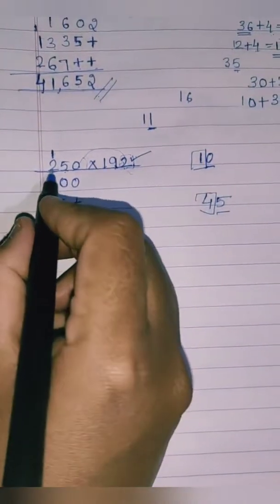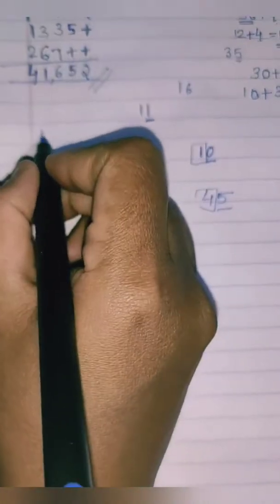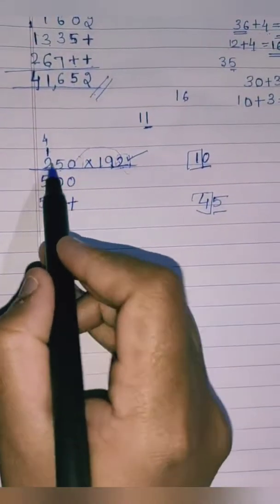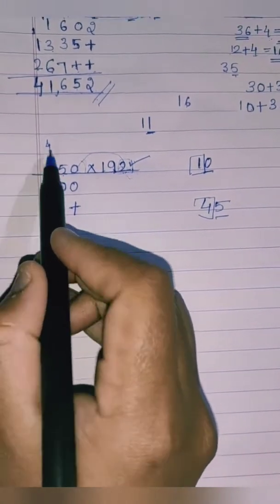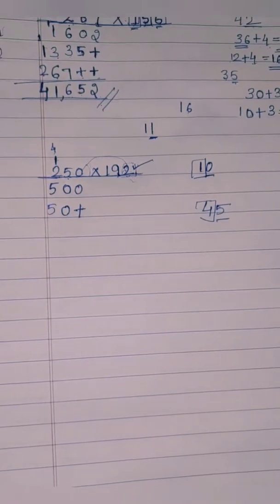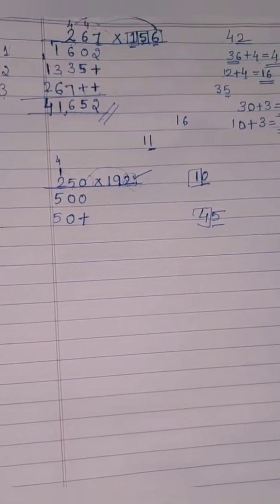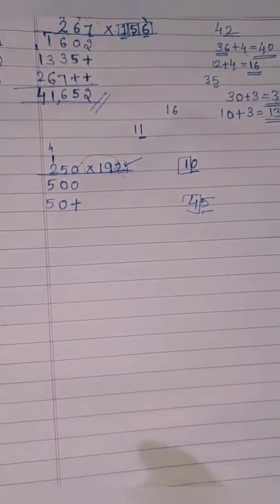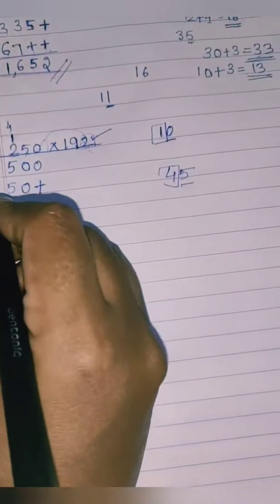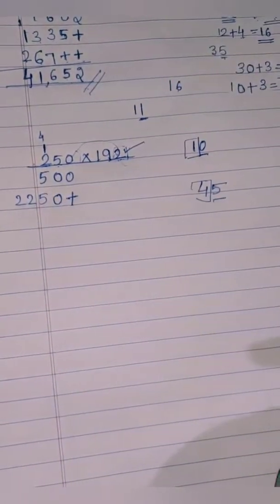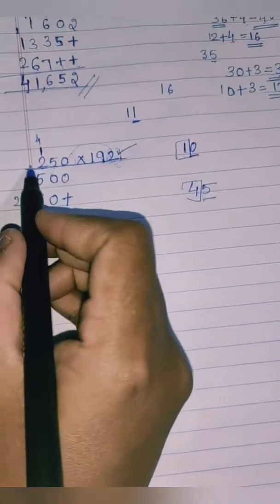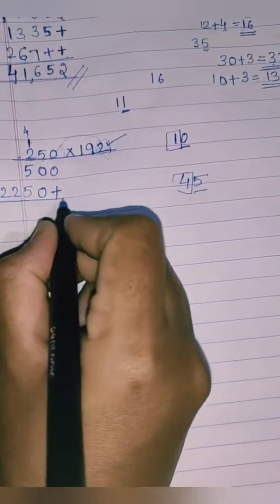Next: nine twos are 18, plus carry 4 is 22. Since there are no more digits, we write the whole 22 here — no further carry needed.